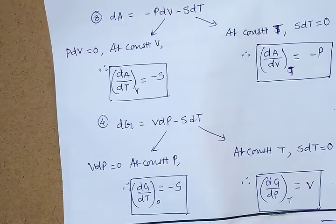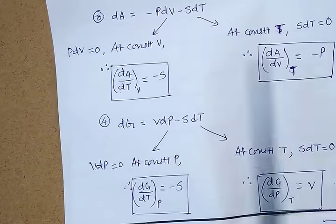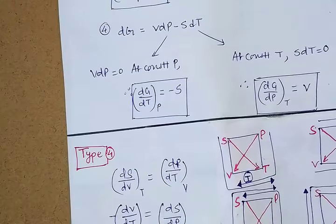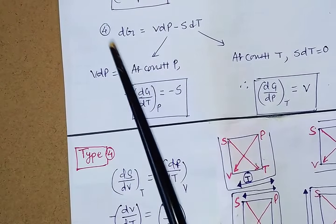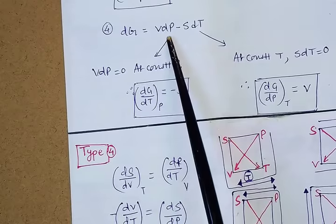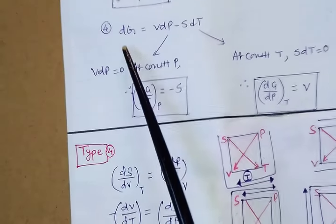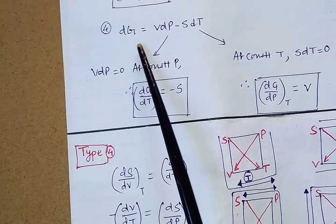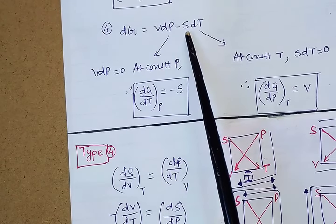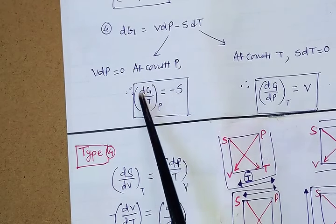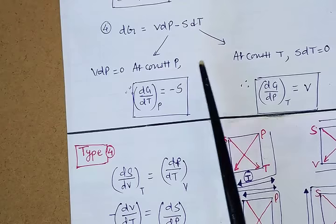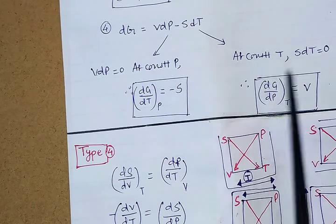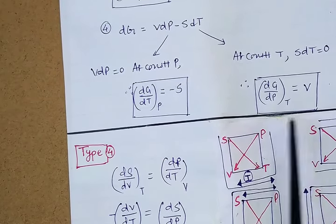Applying the same process to the other equations, each Type 2 equation yields two Type 3 relations. Remember to preserve minus signs: for example, from DG = V·dP − S·dT, taking P constant gives (∂G/∂T)_P = −S, and taking T constant gives (∂G/∂P)_T = V. The negative sign is retained wherever it appears in the original equation.